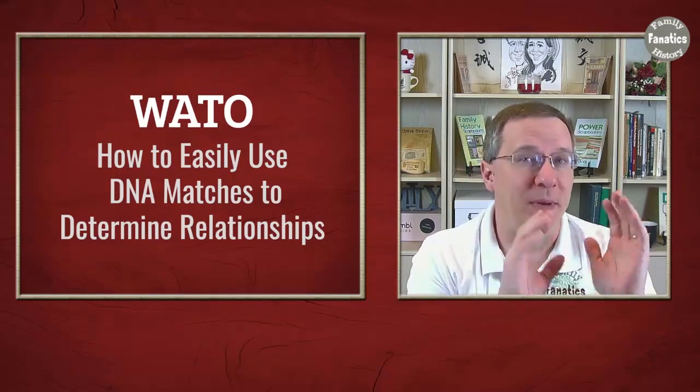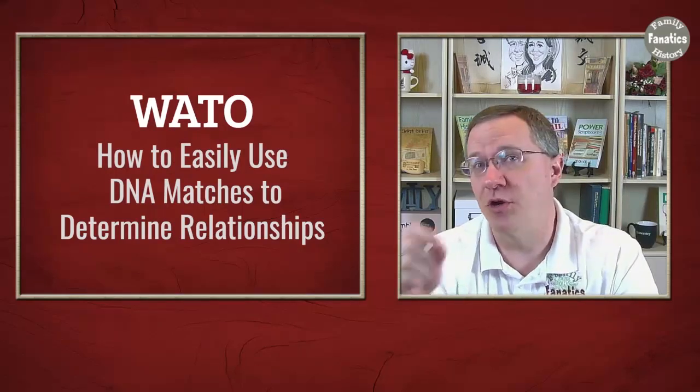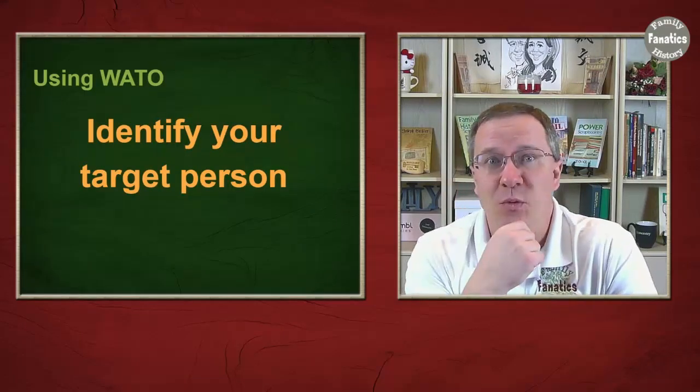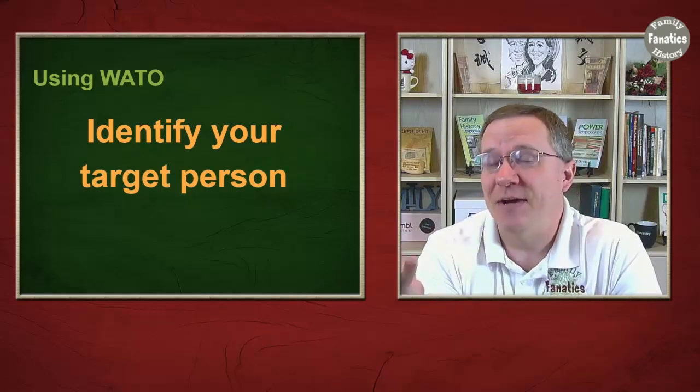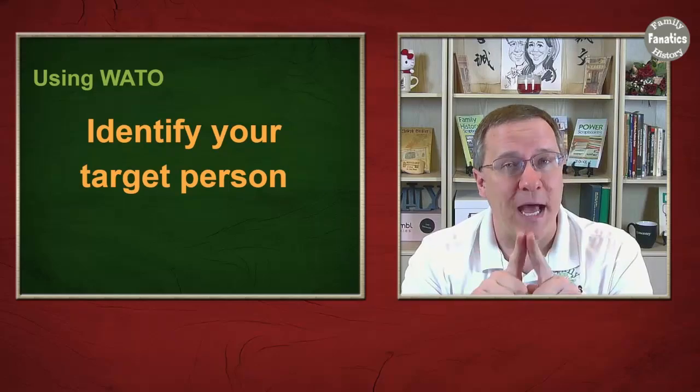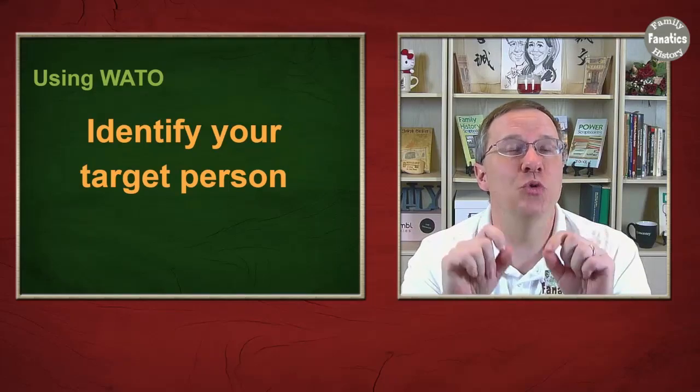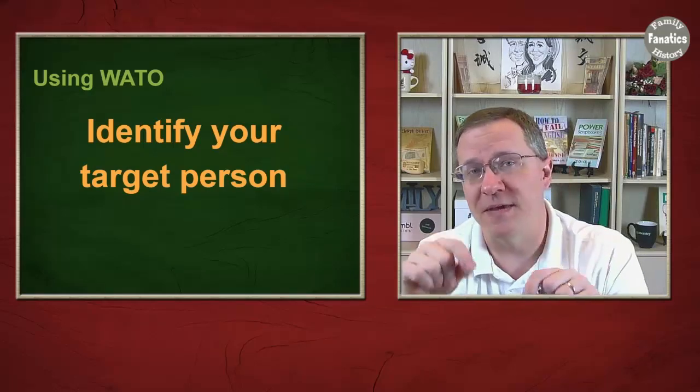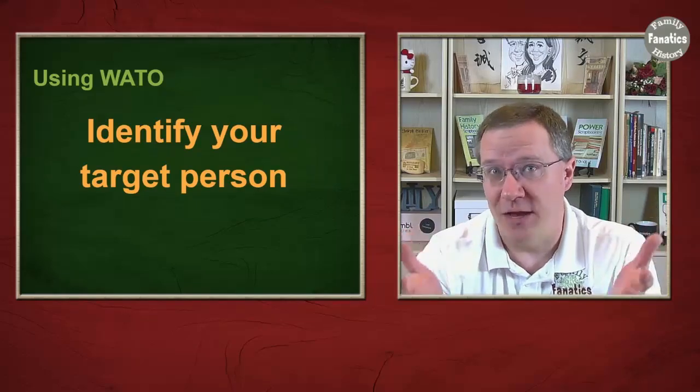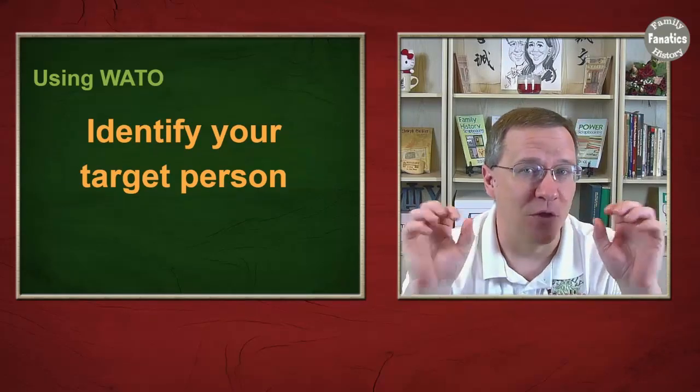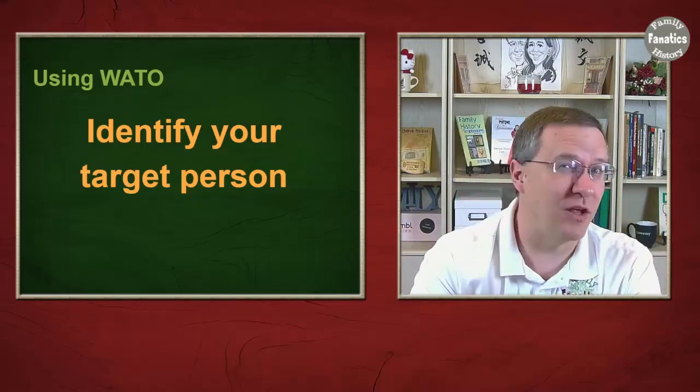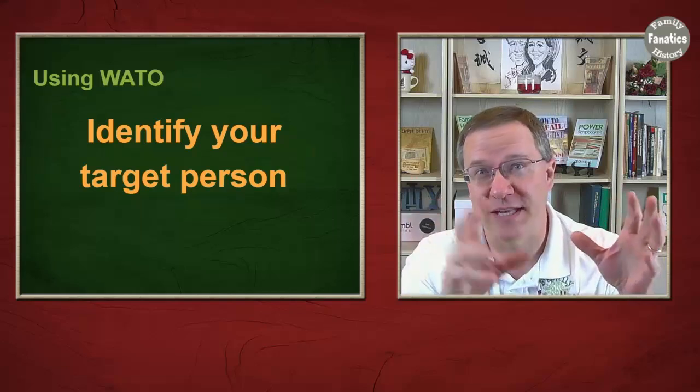Let's go through some of the basic steps that you need to know in order to get started using the WATO tool. The first thing with using WATO is you need to identify who your target person is. Some people get confused on this, but the target person is who you don't know where they fit into a family tree. For instance, if you are adopted this could be yourself where you've taken a DNA test, now you have all these matches, and you want to figure out who your biological father was or your biological mother was. So you're going to use these matches to find that out.